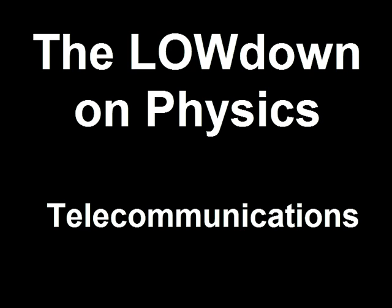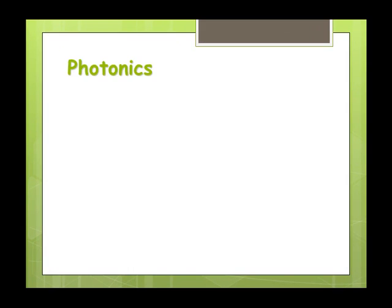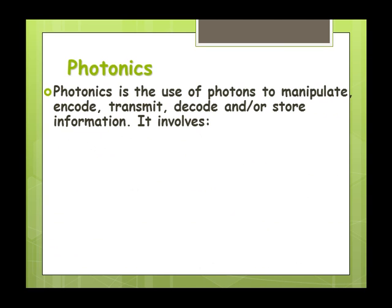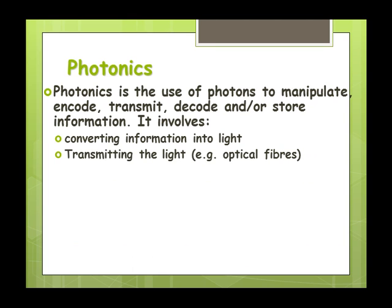Today we'll be looking at the transmission and collection of the electronic signal using photonics. Let's start off by defining what photonics is. It's a branch of science that uses photons to manipulate, encode, transmit, decode, or store information. It involves using electronic systems to convert information into light, transmitting that light along optical fibers or from a television remote to a TV.